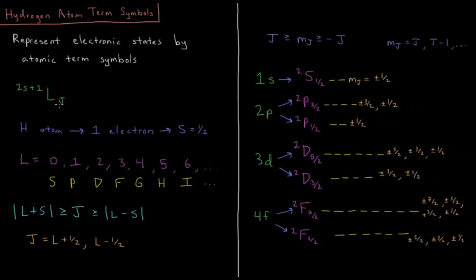Then we have a subscript in the bottom right, and that is going to be whatever value of j we have for this combination of L and s.